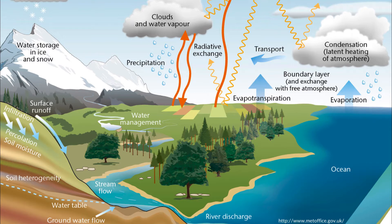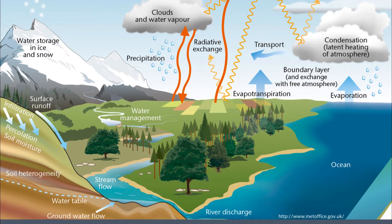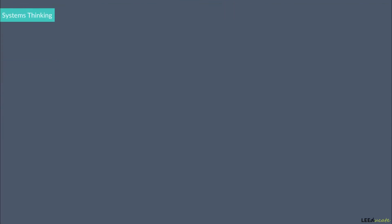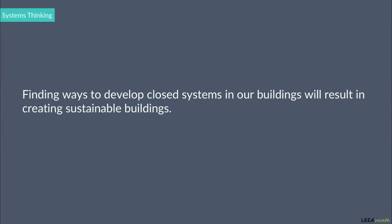That water then becomes underground water, which again joins the oceans and seas with the flow. This sustainable cycle does not end. Finding ways to develop closed systems in our buildings will result in creating sustainable buildings.